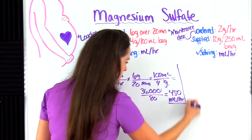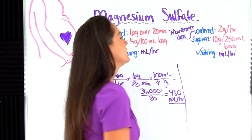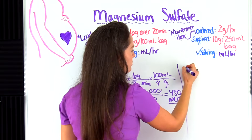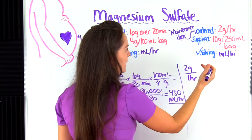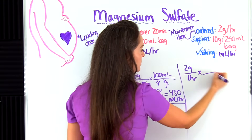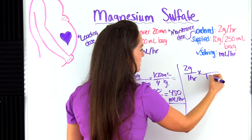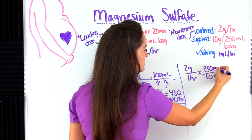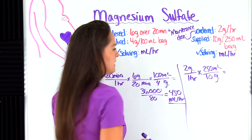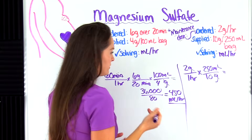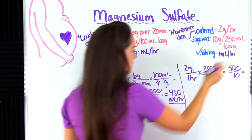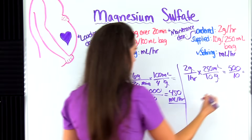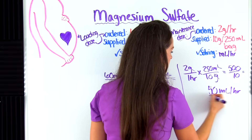Now for the maintenance dose: the healthcare provider wants the patient to have two grams over one hour. We bring grams over and plug in the supplied bag — 10 grams per 250 mL — and that cancels out grams. We have milliliters per hour. Multiplying gives us 500 on top and 10 on the bottom. Dividing: 500 divided by 10 gives us 50 milliliters per hour for the maintenance dose.